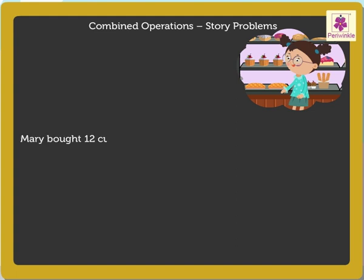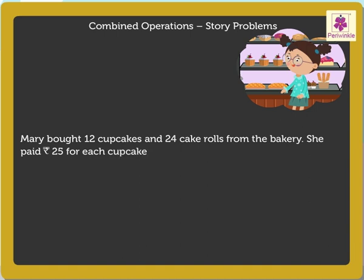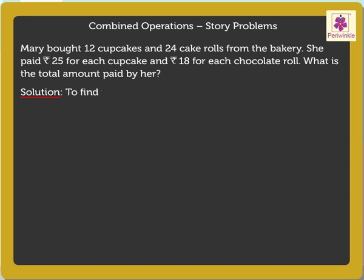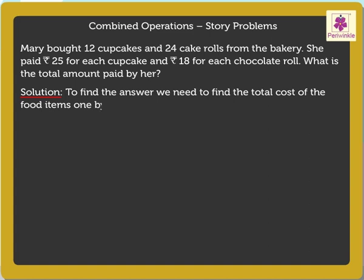Mary bought 12 cupcakes and 24 cake rolls from the bakery. She paid 25 rupees for each cupcake and 18 rupees for each chocolate roll. What is the total amount paid by her? To find the answer, we need to find the total cost of the food items one by one, then add them.